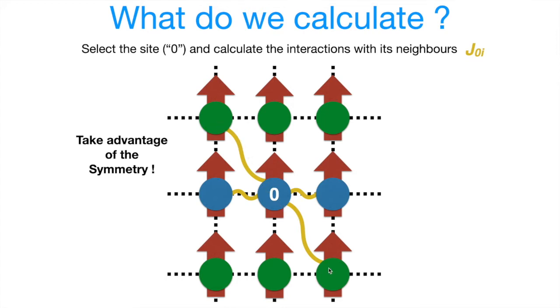But fortunately, most often we have some symmetries in the material. So for example, the interaction between the nearest neighbors is the same, so we don't have to calculate the couplings with every individual neighbor, and it's enough just to calculate with one of them.